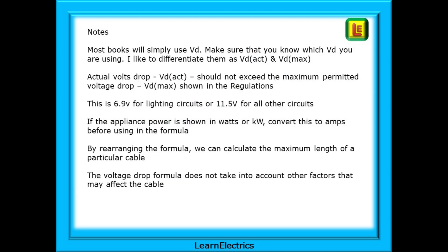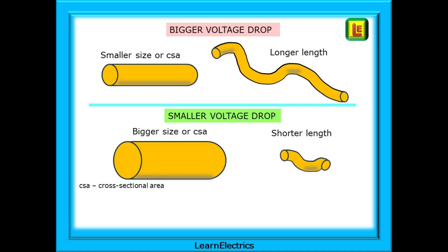A few notes as a recap on what we've talked about. Most books will simply use VD. Make sure that you know which VD you're using. I like to differentiate them as VD(actual) and VD(maximum). Actual volts drop VD(actual) should not exceed the maximum permitted voltage drop VD(max) shown in the regulations. This is 6.9 volts for lighting circuits or 11.5 volts for all other circuits. If the appliance power is shown in watts or kilowatts convert this to amps before using in the formula. By rearranging the formula we can calculate the maximum length of a particular cable. The voltage drop formula does not take into account other factors that may affect the cable.